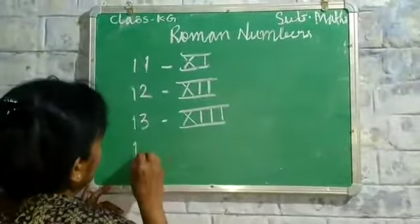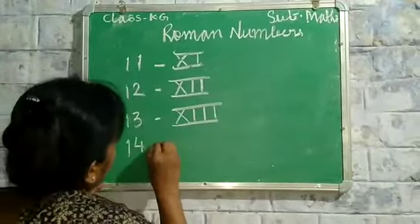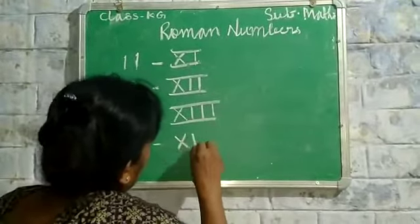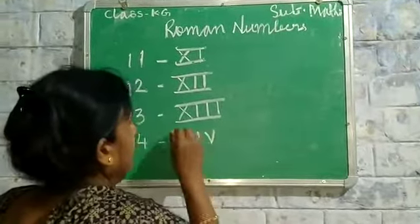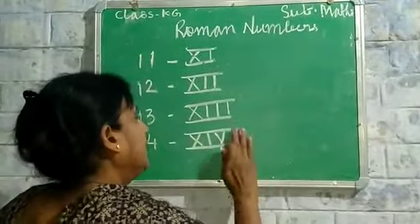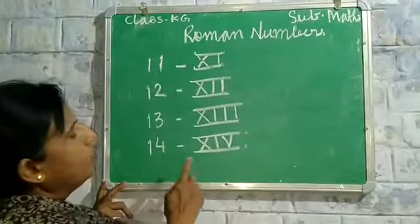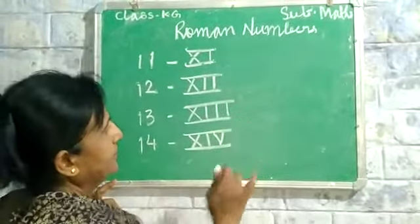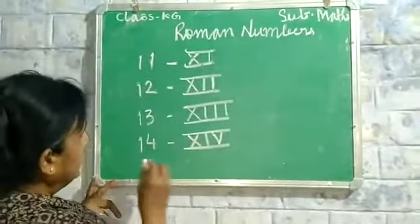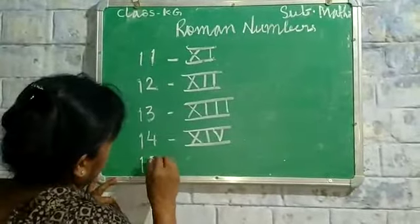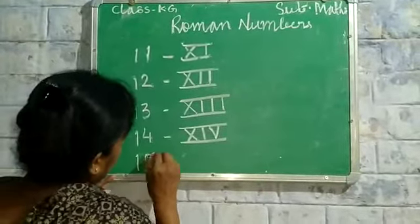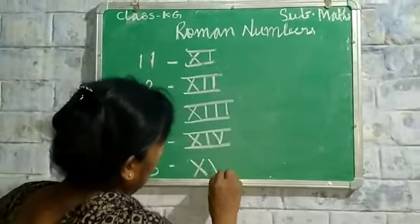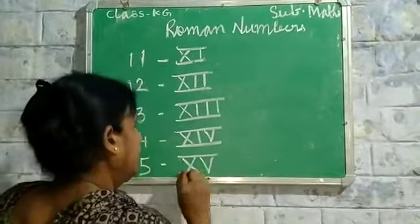14. I will teach you 14. Here is 14 — how do you write it? Here is 14: X and V.